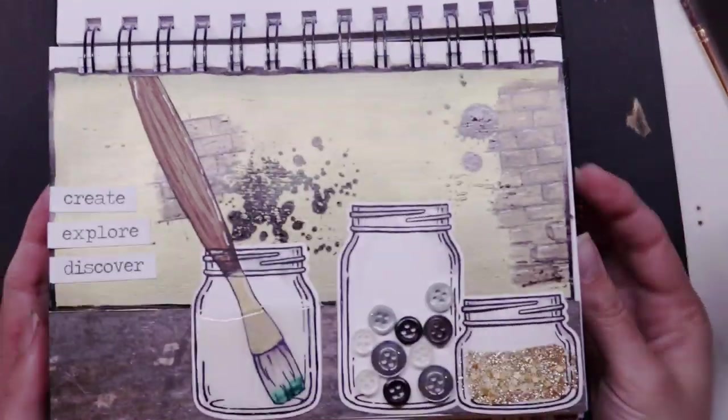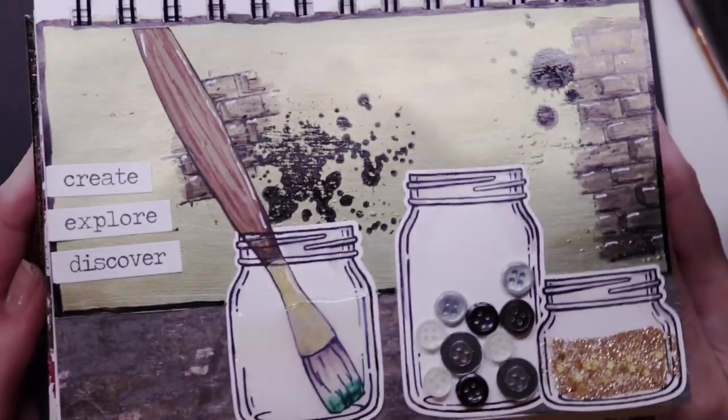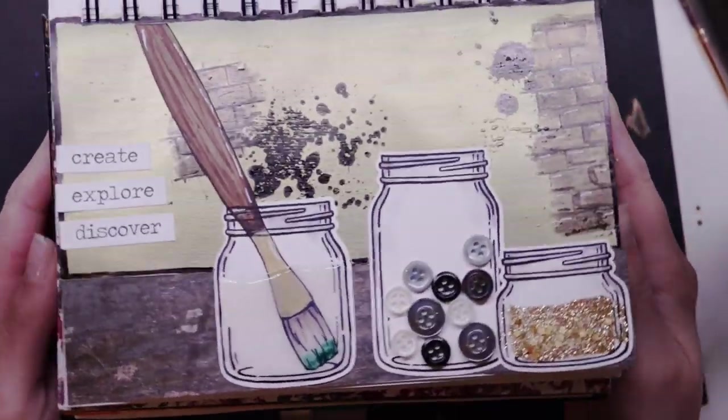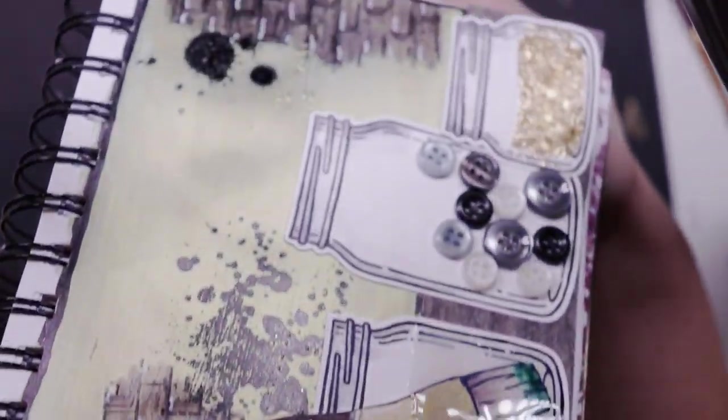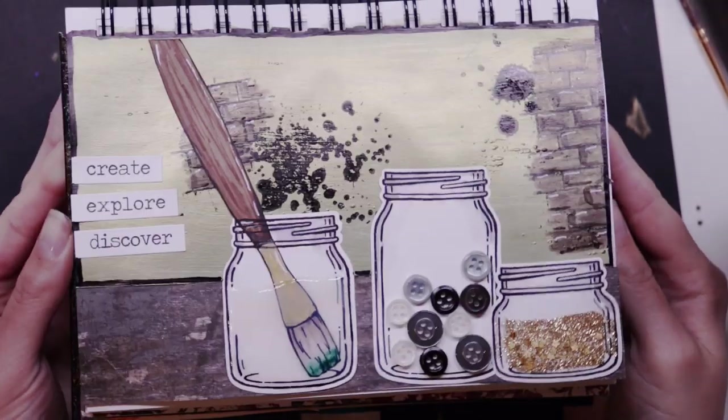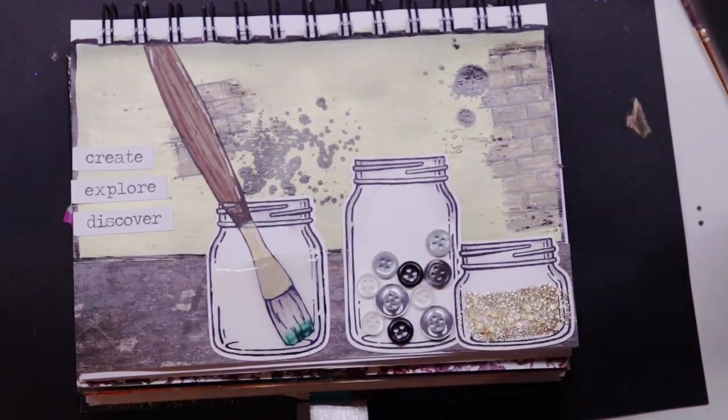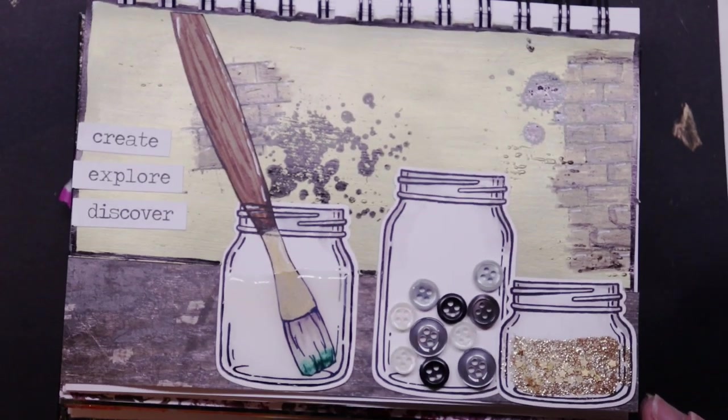So there you have it, there is my finished art journal layout. I hope you enjoyed it and got inspired, and I hope that you found my tips for using eyeshadow as a paint helpful. If you enjoyed this video, please give me a thumbs up, don't forget to subscribe, and feel free to leave me any questions or comments below. If you like this video, you'll probably like these videos that are going to pop up on the screen. Check them out and have fun, and until next time, happy crafting!